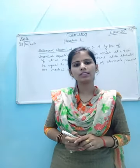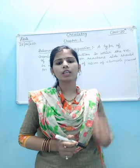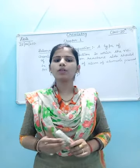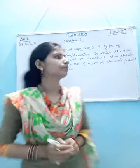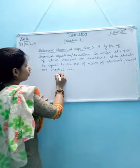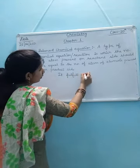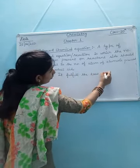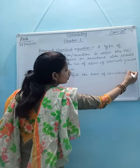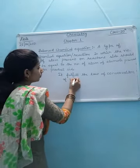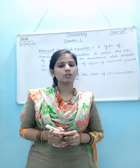What is a balanced chemical equation? A balanced chemical equation is a type of chemical equation or reaction in which the number of atoms present on the reactant side should be equal to the number of atoms present on the product side. It fulfills the law of conservation of mass.